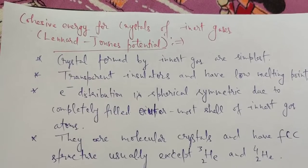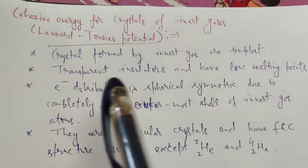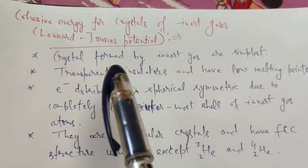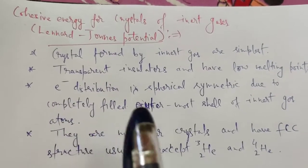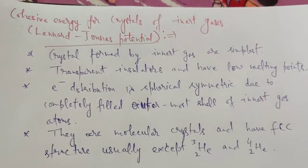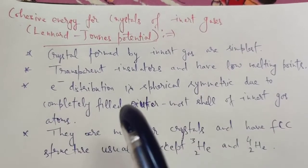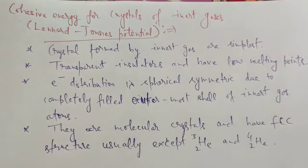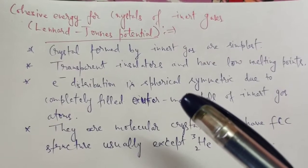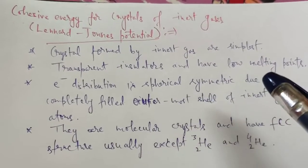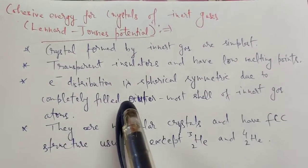Inert gas crystals are the simplest — they are transparent insulators and have low melting points. They are transparent insulators because they do not have unpaired electrons, and their electronic charge distribution is spherically symmetric, due to the completely filled outermost shell of inert gas atoms.